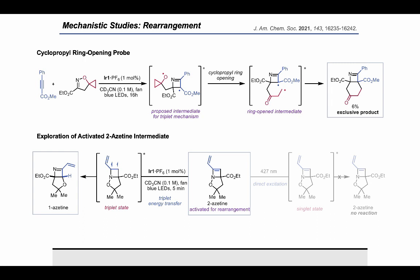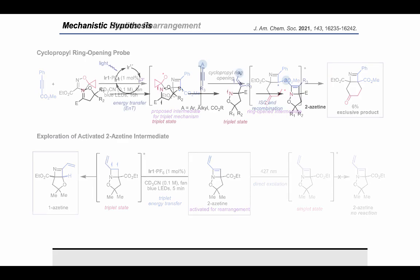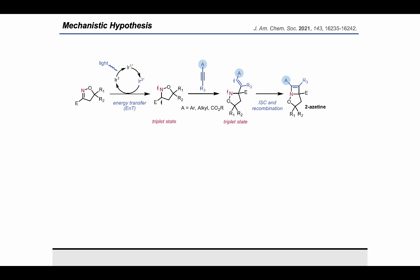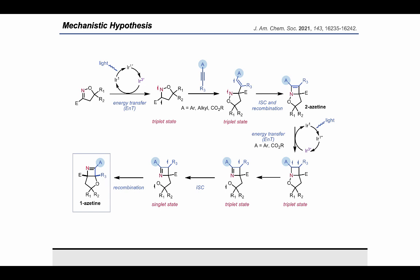These observations are in line with the triplet stepwise mechanism, as no reactivity was observed under direct excitation conditions. Given these results, we propose the following mechanism: First, the isoxazoline is sensitized to its triplet state, which adds into the alkyne forming a 1,4-biradical which then undergoes intersystem crossing and subsequent recombination to form the initial 2-azetine product through a stepwise 2+2 cycloaddition. For aliphatic alkynes, this is the final product. But for aryl or activated alkynes, this 2-azetine can be sensitized a second time to form a triplet biradical intermediate which undergoes rearrangement and intersystem crossing, followed by radical recombination to form the final 1-azetine product.